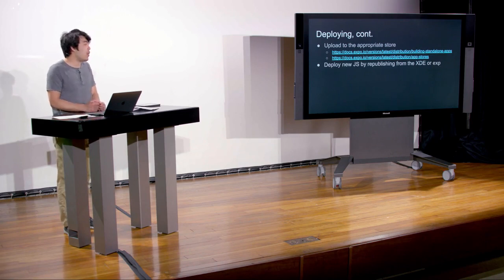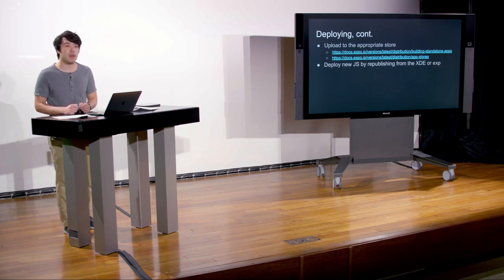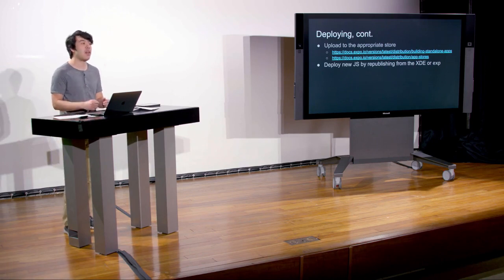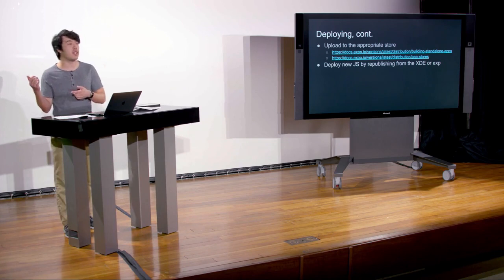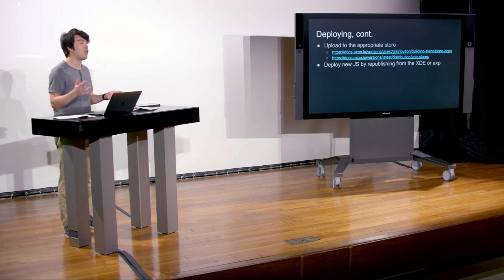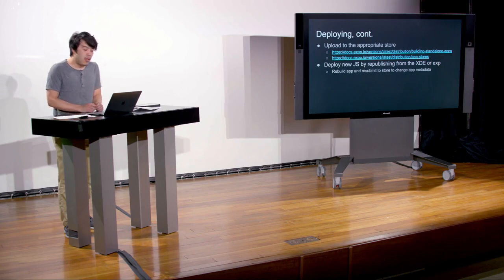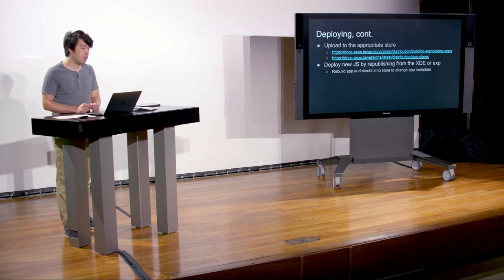One great thing you can do with Expo is deploy new JavaScript by republishing — called over-the-air updates. Because your app is really just a shell running JavaScript code, you can download a new JavaScript bundle from the web. By republishing from the XDE or using the exp script, you can push a new JavaScript bundle to your clients without having them re-download the app from the app store. Though if you want to change any application metadata like the name, you'll need to resubmit to the store.